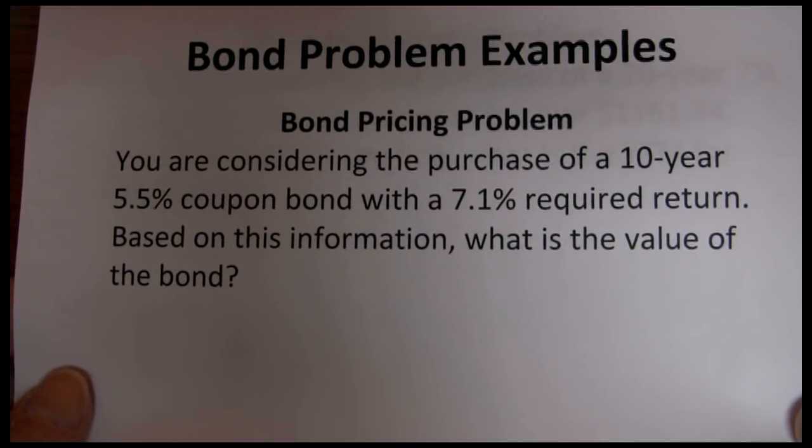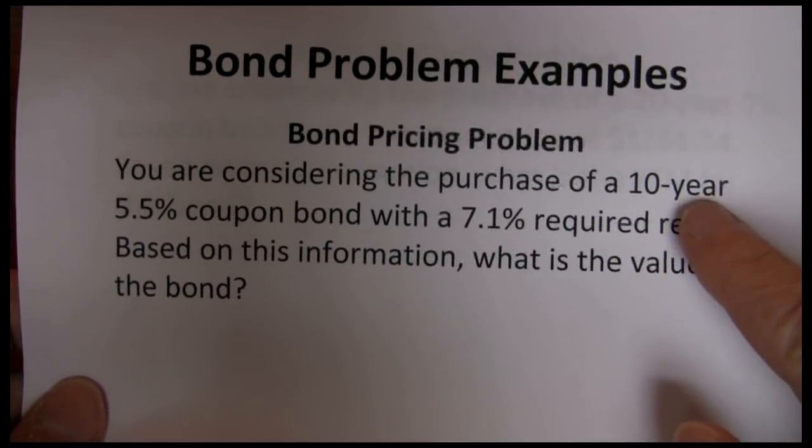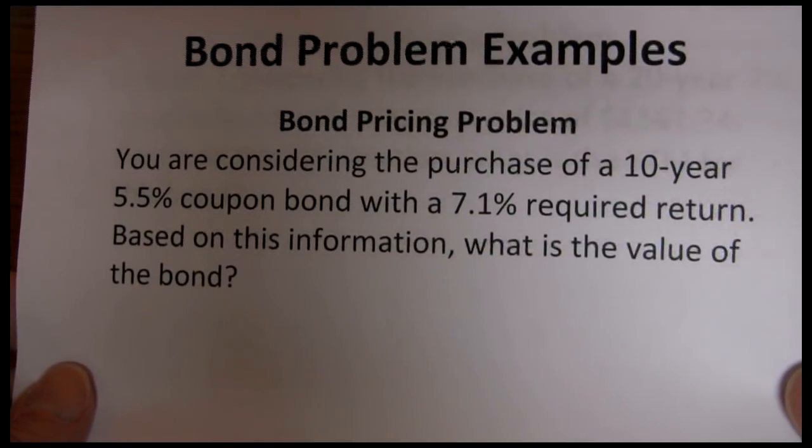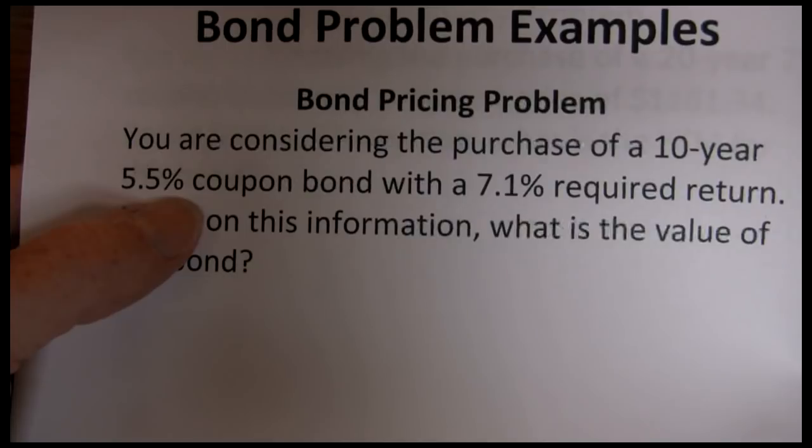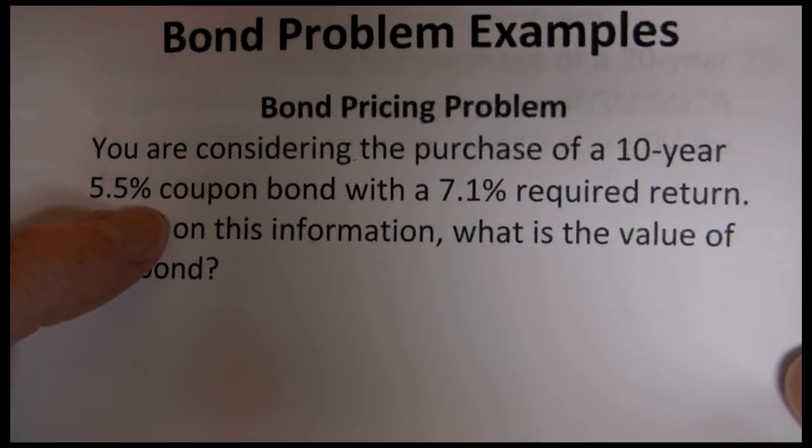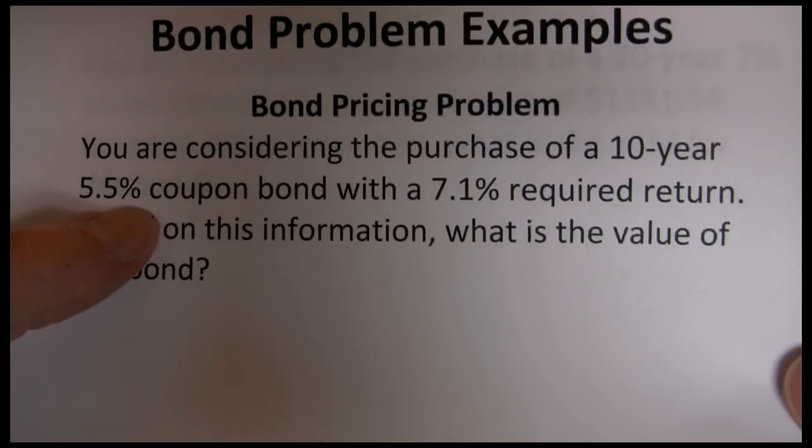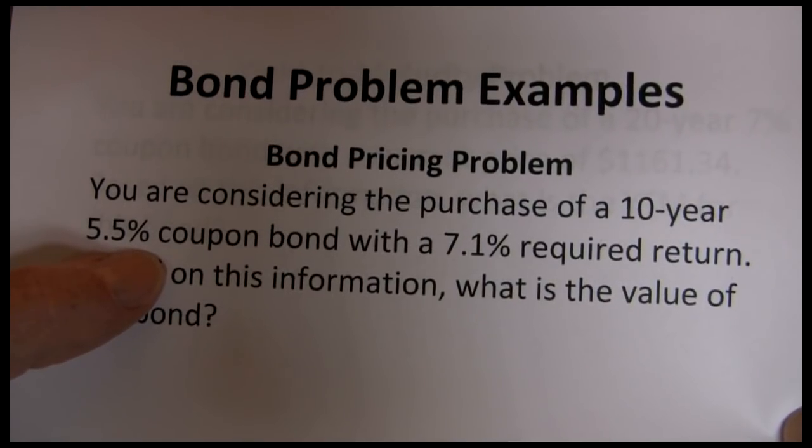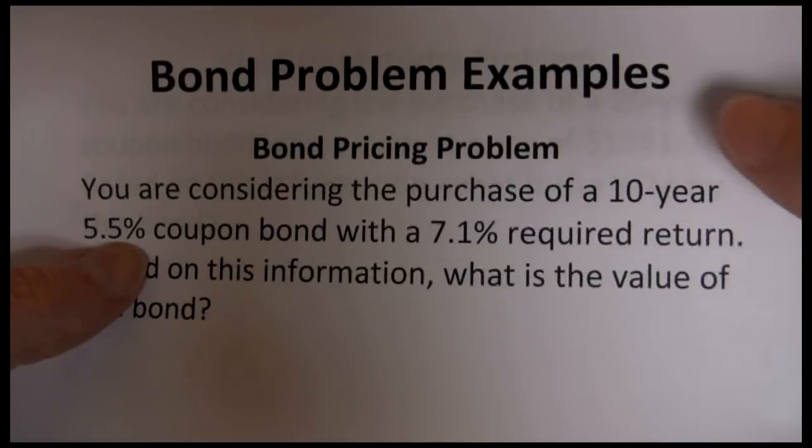We said the first thing we need to do is forecast the cash flows. Now bonds are easy because bonds have a fixed time horizon. This bond is going to mature in 10 years, so we know we're going to be receiving cash flows for 10 years. They also have a fixed coupon payment, our cash flow each year. The cash flow each year is based on this coupon rate. The 5.5% coupon tells us that each year we're going to receive 5.5% of the par value in coupon payments. Now a lot of times, bonds will split that coupon payment into two semi-annual payments, and that's what we're going to do in this class. We're going to assume bonds pay interest semi-annually, so that $55 per year is going to break down to $27.50 every six months.